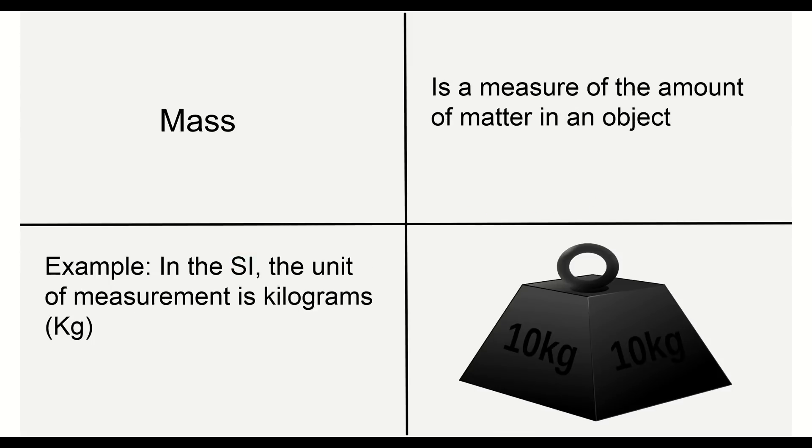Up next we have mass. Mass is the measure of the amount of matter in an object. For example, in the SI the unit of measurement is kilograms, abbreviated kg. So we have our SI being kilograms, abbreviated by kg.